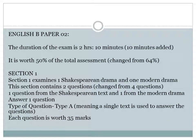The English B Paper 2. The duration of the exam is 2 hours and 10 minutes — 10 minutes have been added. It is worth 50% of the total assessment, which is a change from the original 64%.